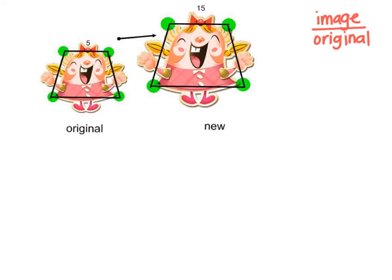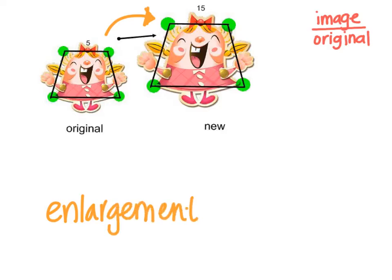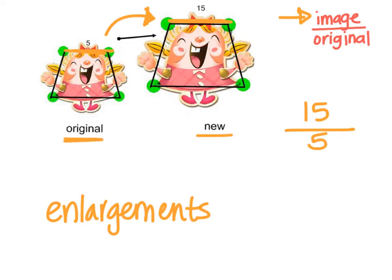I have two video game characters and I want to know the scale factor to get from my original to my new image. This is an enlargement — it got bigger — but I want the sides to stay proportional. So I take the image length, 15, and put that over the original length, which was 5. So 15 over 5 equals 3. The scale factor is 3. Let's check: 5 times 3 is 15 — yes! So that is my scale factor for this shape.